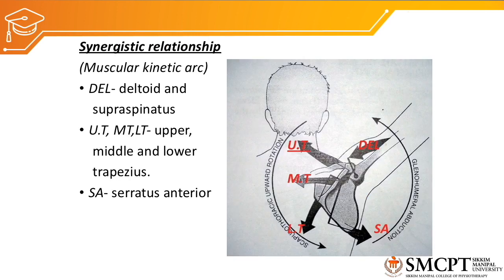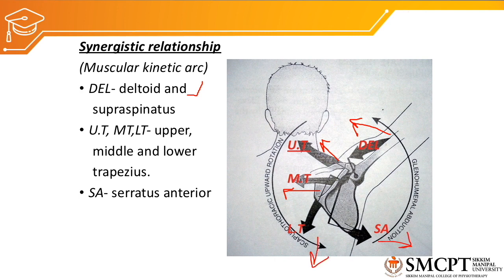During upward rotation of the scapula, which occurs when the humerus goes into abduction, we can see the synergic relationship of the muscles. First, the deltoid and supraspinatus contract to create abduction of the glenohumeral joint. The upper trapezius pulls the clavicle upward, creating elevation of the clavicle and scapula. The middle trapezius pulls the upper part of the scapula medially, while the lower trapezius pulls downward and the serratus anterior pulls the scapula anteriorly and laterally. When all these muscles contract simultaneously, they create upward rotation of the scapula along with abduction of the glenohumeral joint.